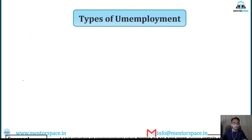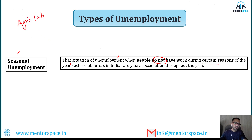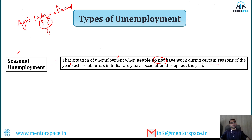Seasonal unemployment is a situation where people do not have work during certain seasons of the year. Agriculture is a seasonal business — after every four to six months, laborers get employment in agricultural farms or fields. During the period when they do not get work in agricultural farms or fields, this is known as seasonal unemployment.